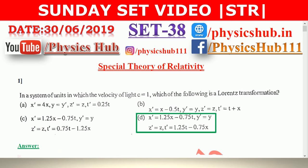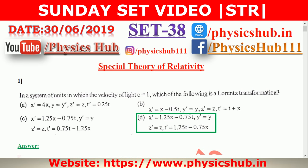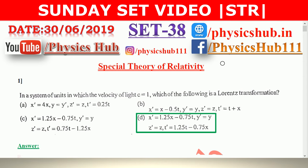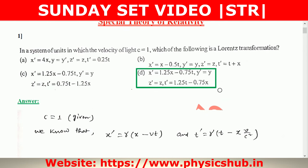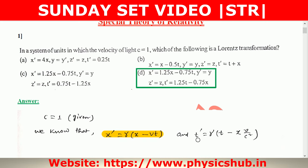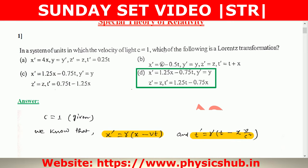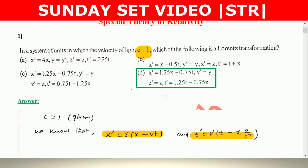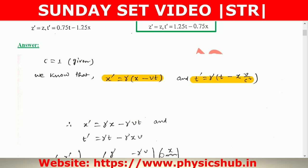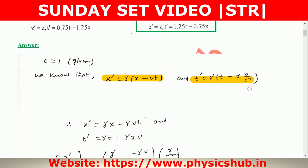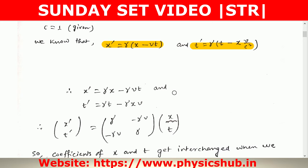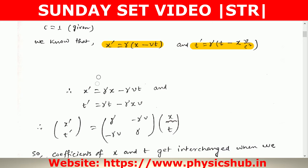This set contains questions from the special theory of relativity. Question 1: In a system of units in which the velocity of light c equals 1, which of the following is a Lorentz transformation? We know the Lorentz transformation formula: x′ = γ(x − vt) and t′ = γ(t − vx/c²). Since c = 1, we write x′ = γx − γvt and t′ = γt − γvx, and we express this in matrix form.